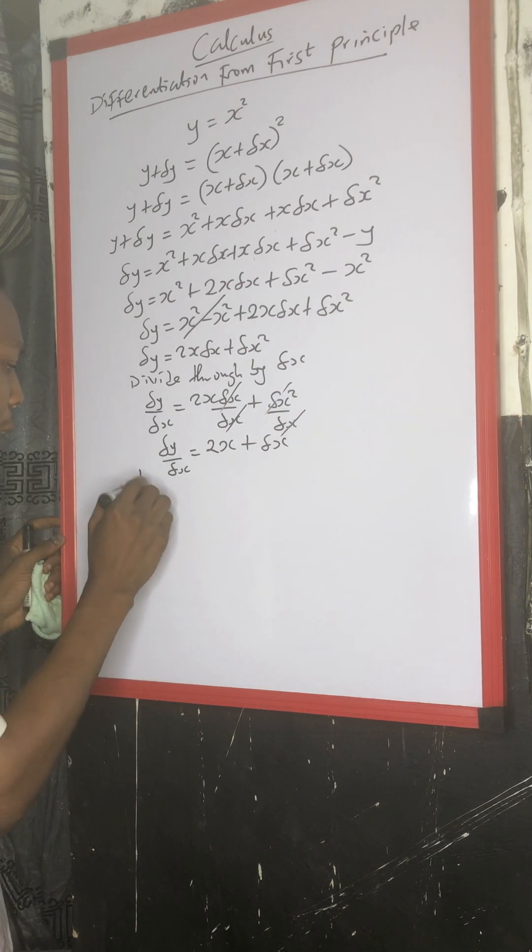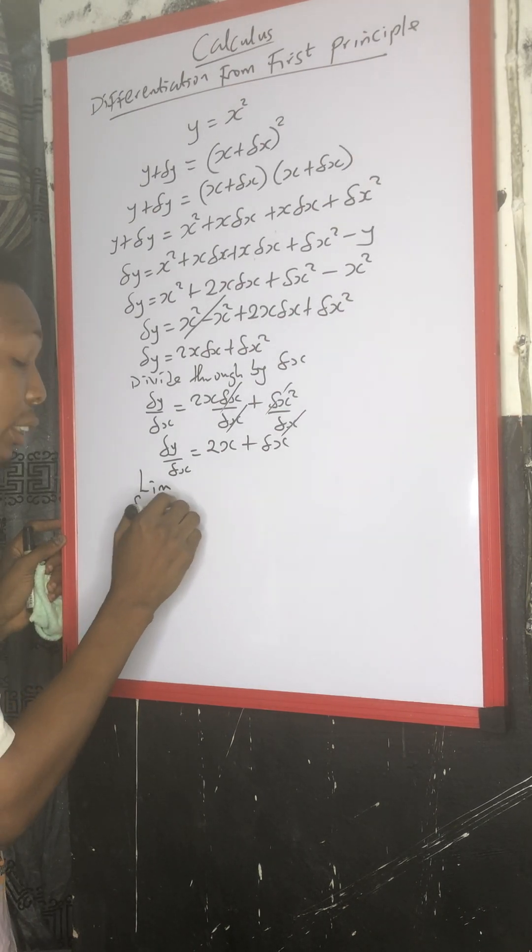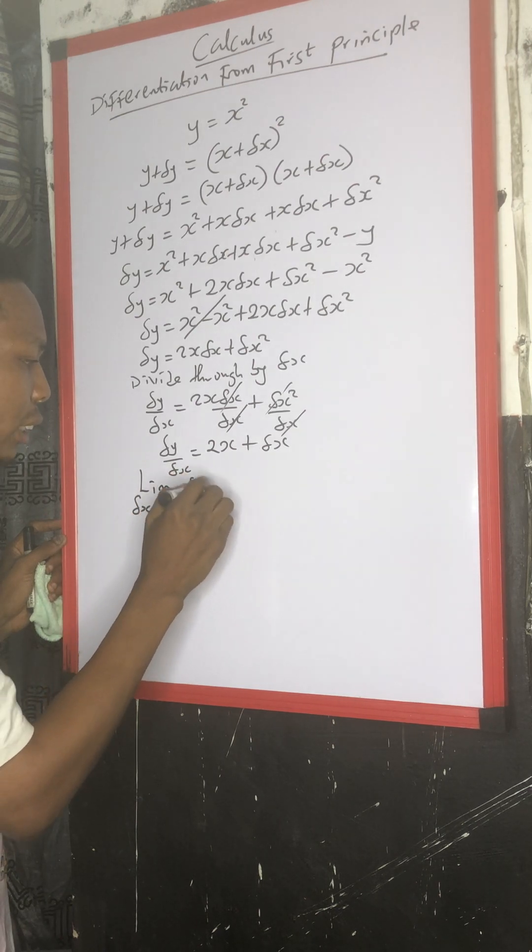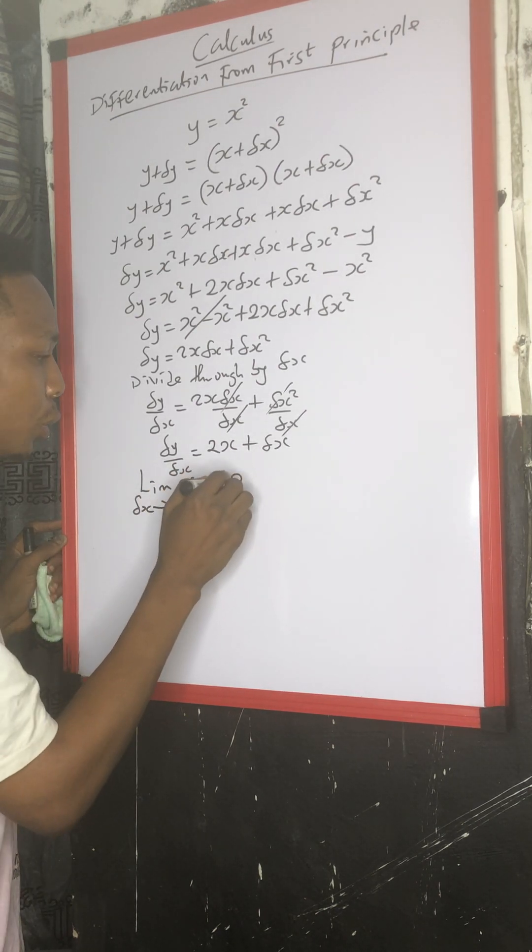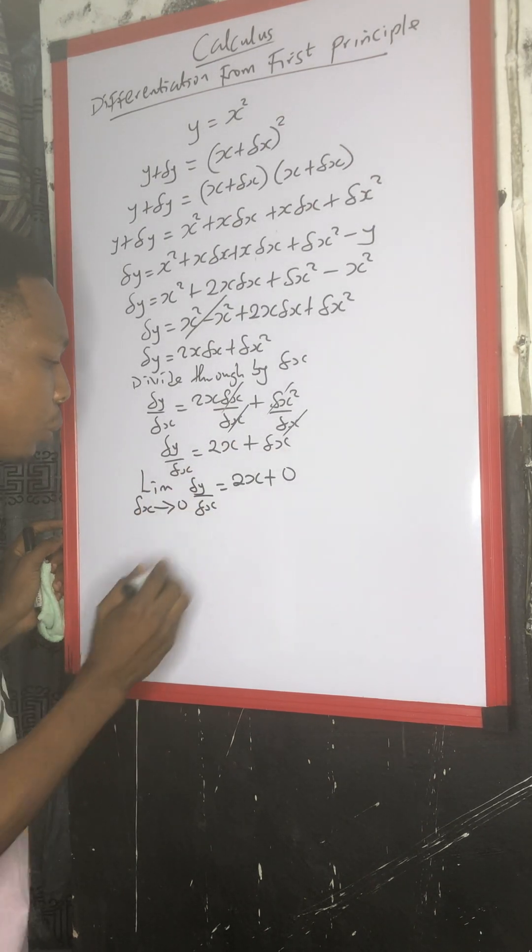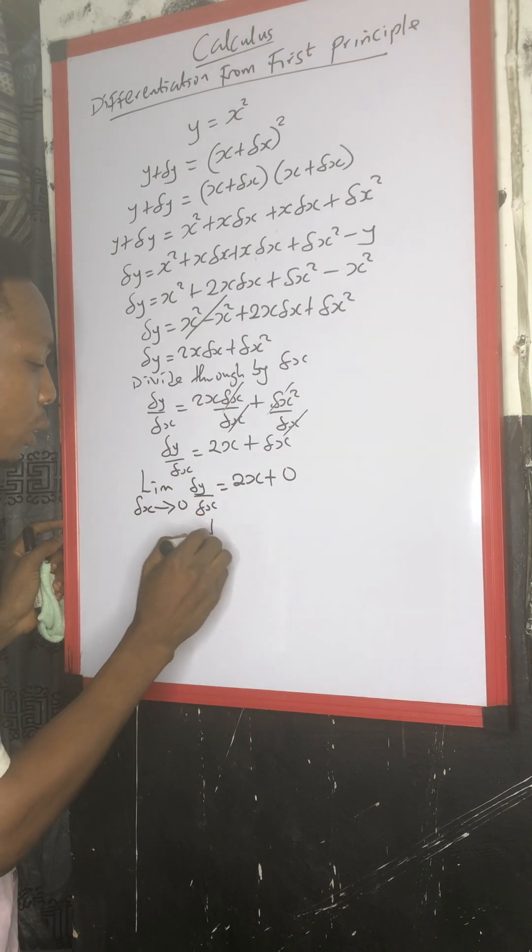Then, if you take limit of change in x approaches 0, we have change in y over change in x equals to 2s plus, then our change in x is represented with 0. So your final step becomes dy over dx equals 2s. All right.